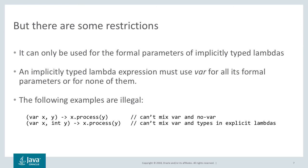There are some restrictions to the use of the local variable syntax for Lambda Parameters. It can only be used for the formal parameters of an implicitly typed Lambda. And if used for one parameter in an expression, it should be used for all of them. As a consequence, the following examples are considered illegal by the compiler.